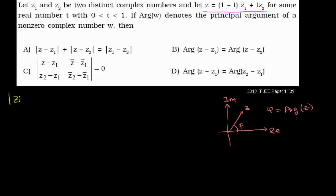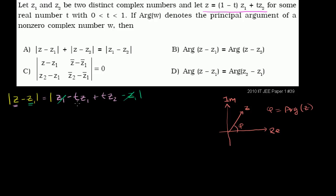The magnitude of z minus z1 is going to be the magnitude of z written out — which is z1 minus tz1 plus tz2 — and from that we subtract z1. The z1 and the minus z1 cancel out. We can factor out a t, so this equals the magnitude of t times z2 minus z1.